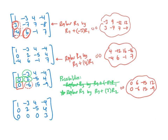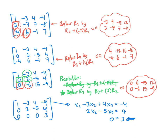We've achieved triangular form. The first row gives x1 minus 3x2 plus 4x3 equals negative 4. The second row gives 2x2 minus 5x3 equals 4. The last row gives 0x1 plus 0x2 plus 0x3 equals 3 — that is, 0 equals 3. Since 0 does not equal 3, this system of equations has no solution. We wouldn't have known that without going through this process.